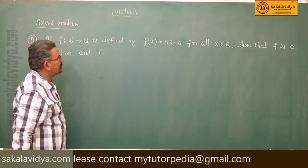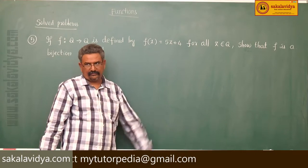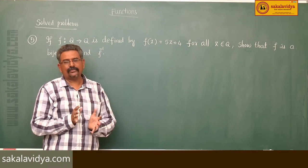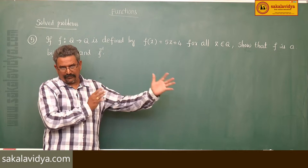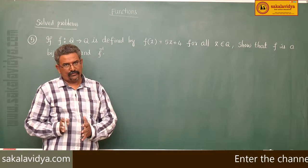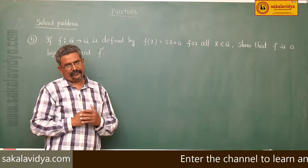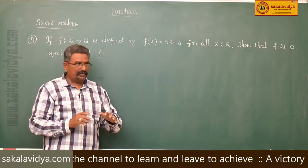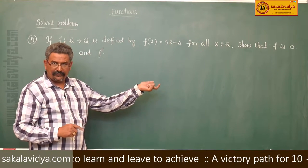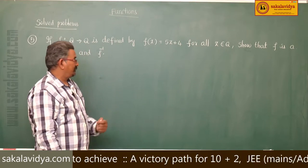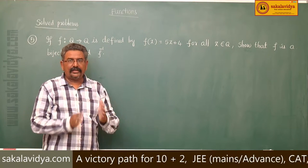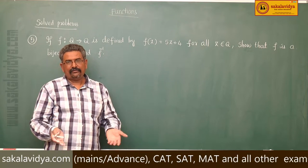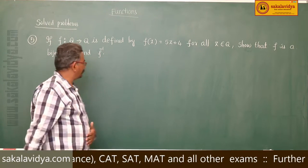We have to show that f(x) is a bijection. In order to prove a bijection function, first we have to prove it is a one-to-one function, next we have to prove surjection. If it is one-to-one and surjection then f is a bijection, and then f inverse exists.